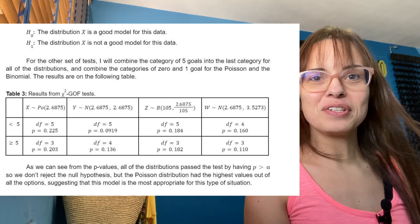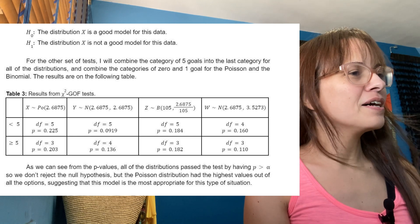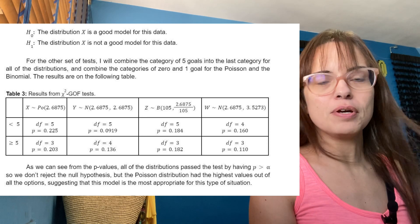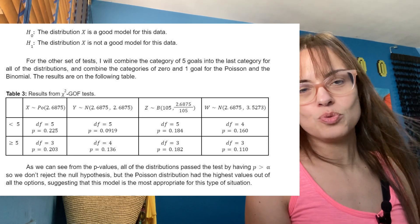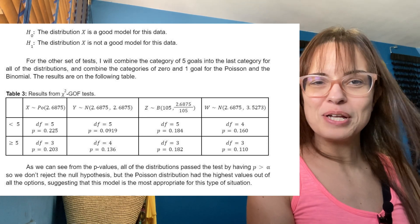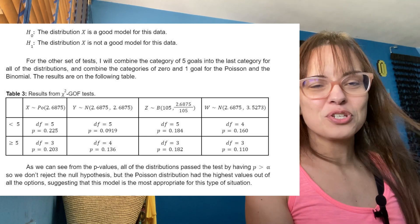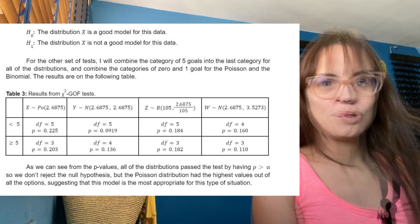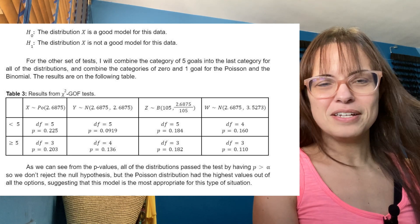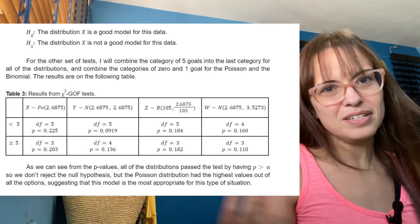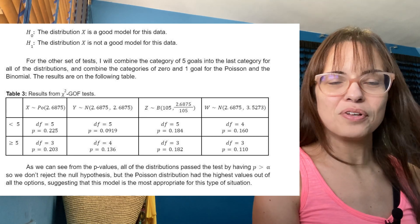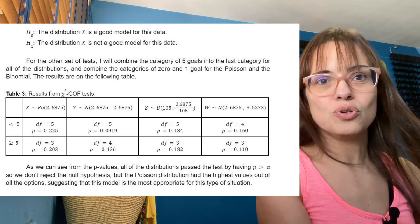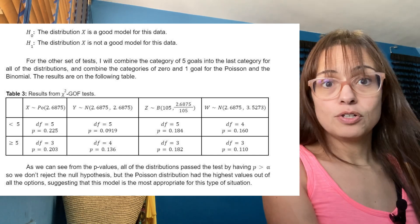That's the end of what I wrote for this IA. Interesting results — big p-values for all of them, but the Poisson had the biggest, which makes sense because that's what I was trying to show: that Poisson is the most appropriate distribution for this kind of situation. It's a somewhat abrupt ending, but I wasn't writing a full IA this time — no introduction, no conclusion. I just wanted to show you the data and a little about the presentation.